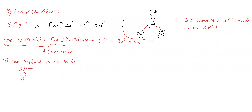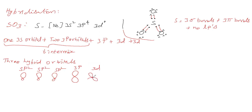The name of the hybrid orbital is sp². Three sp² hybrid orbitals are produced, each with one small lobe and one big lobe. One pure 3p orbital is for pi bonding, and two 3d orbitals are also for pi bonding, accounting for the three pi bonds in SO₃.